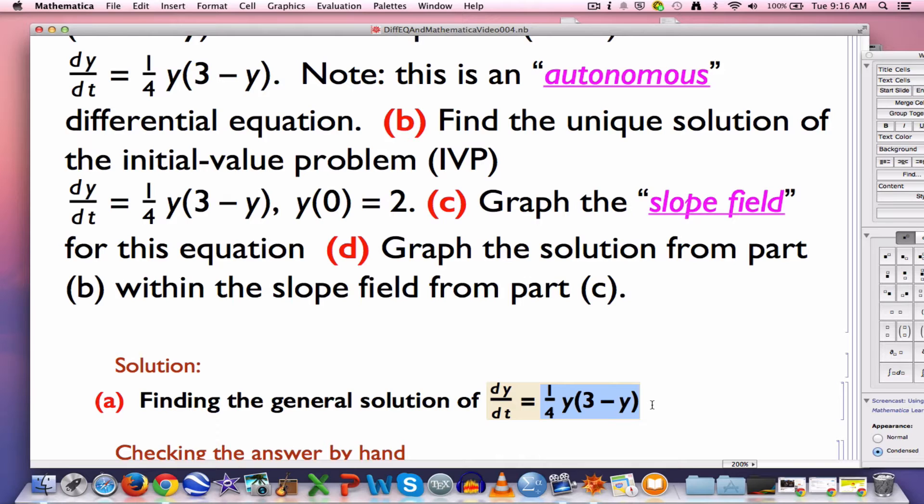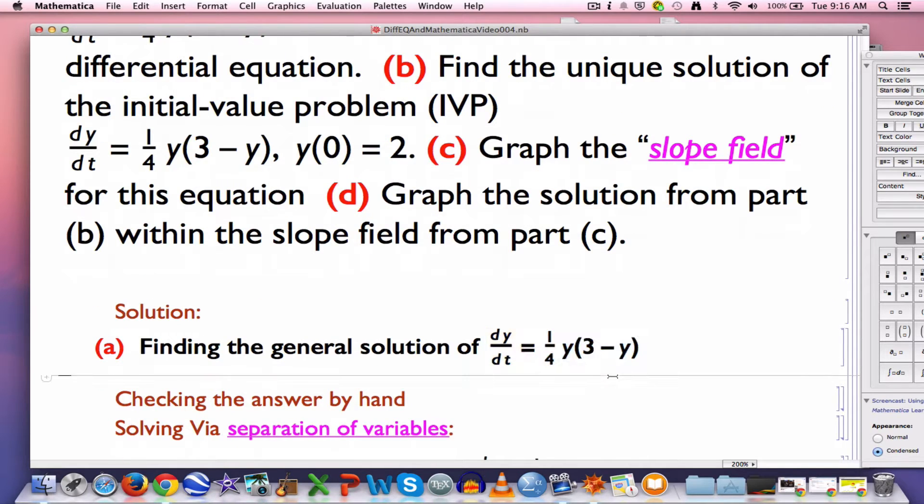The slope field is going to be constant along horizontal lines. t is going to be the horizontal axis, y is going to be the vertical axis. When y is constant, that's going to be a horizontal line. The slope marks in the slope field are going to be constant along those lines for an autonomous equation. And solutions will be horizontal translations of each other.